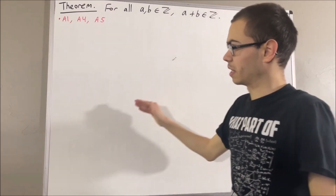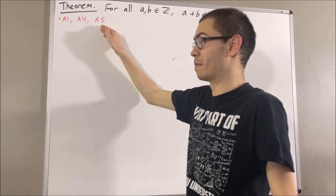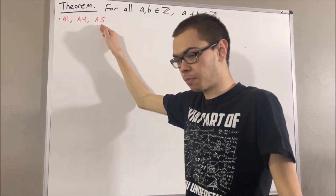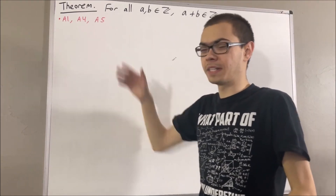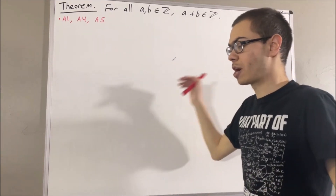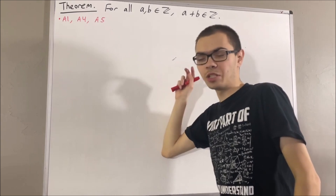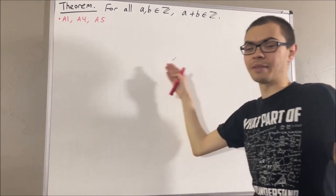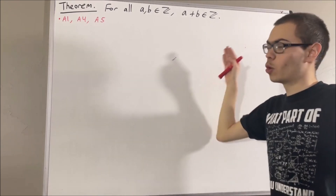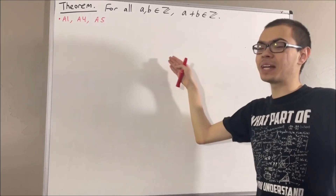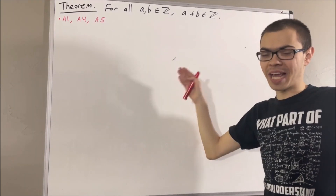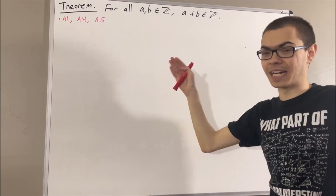Using the concept of the negative of a real number, we define the operation of subtraction so that, given any two real numbers a and b, we define a minus b to be a plus the negative of b.